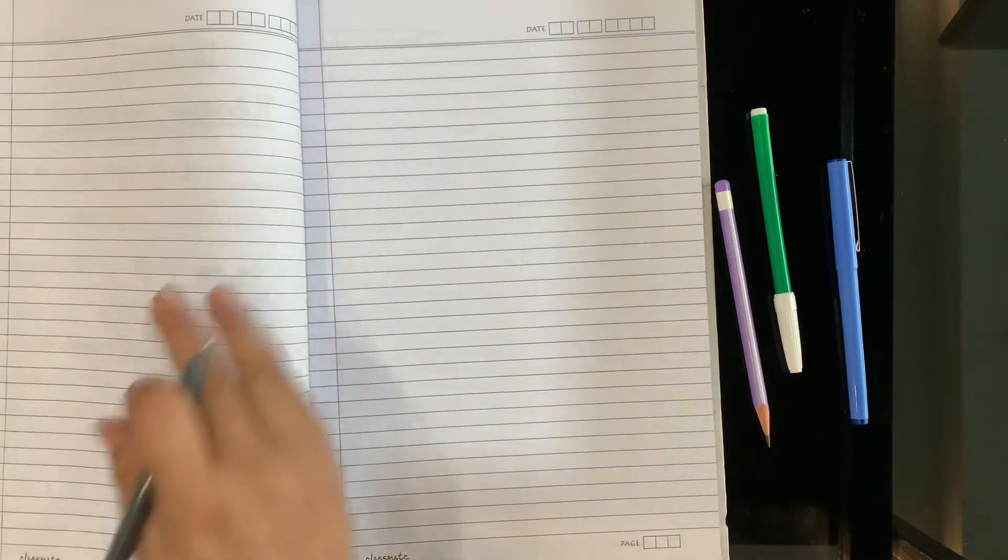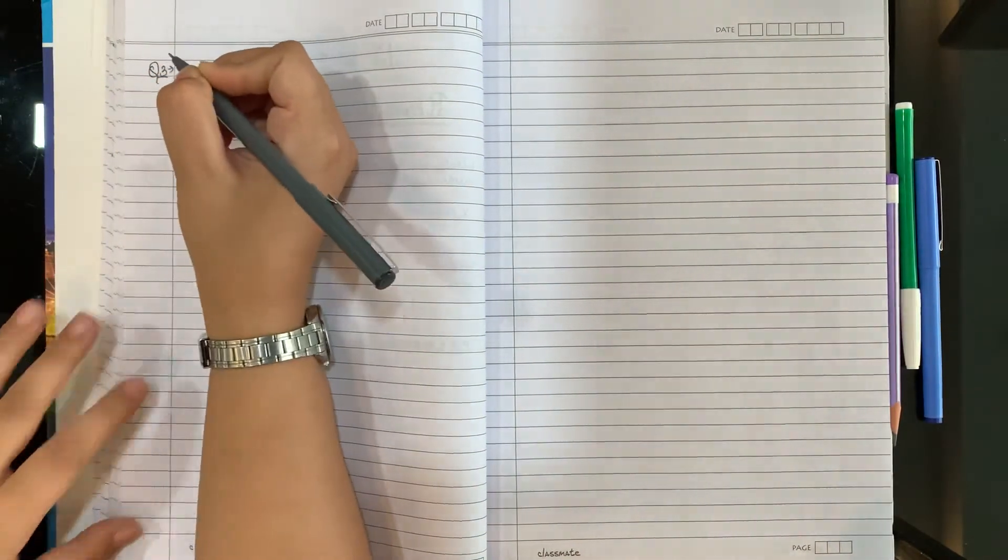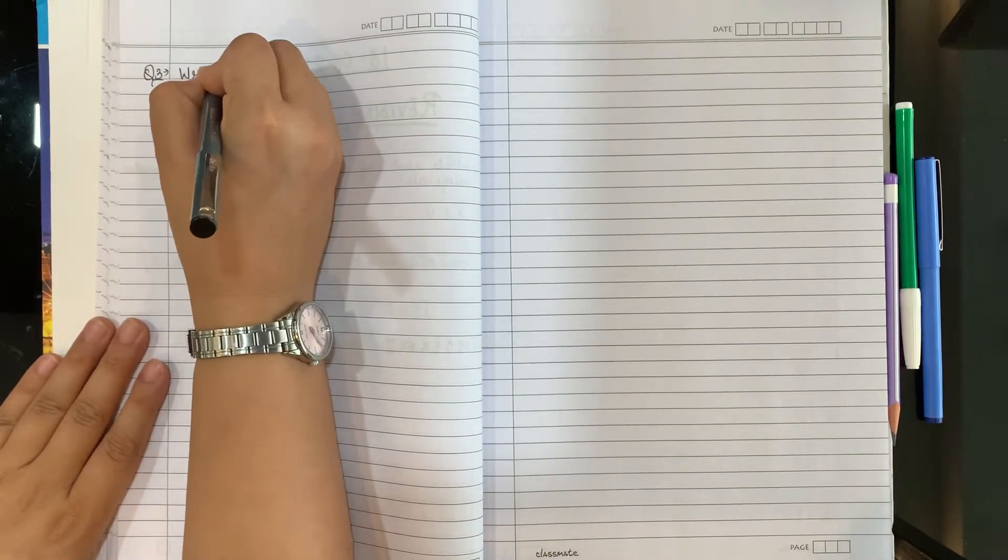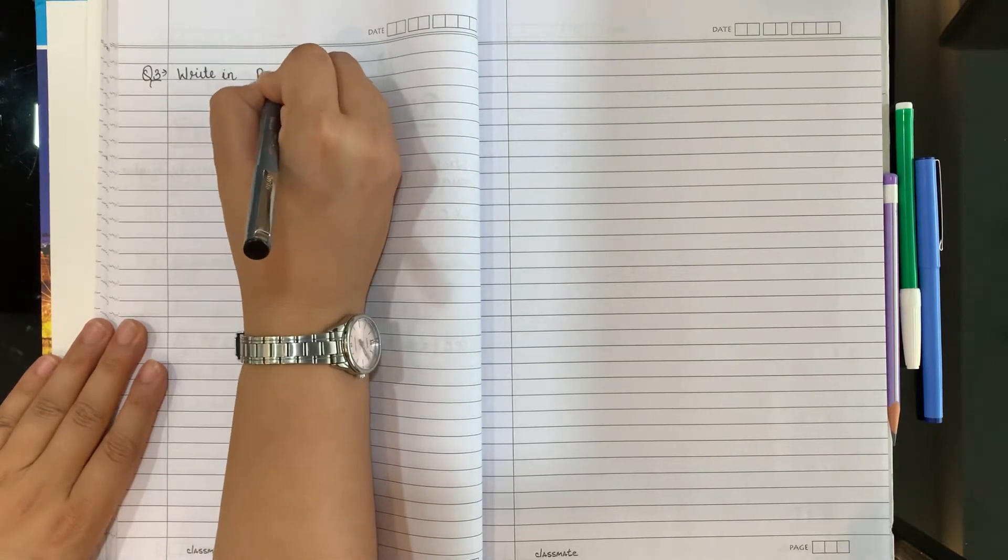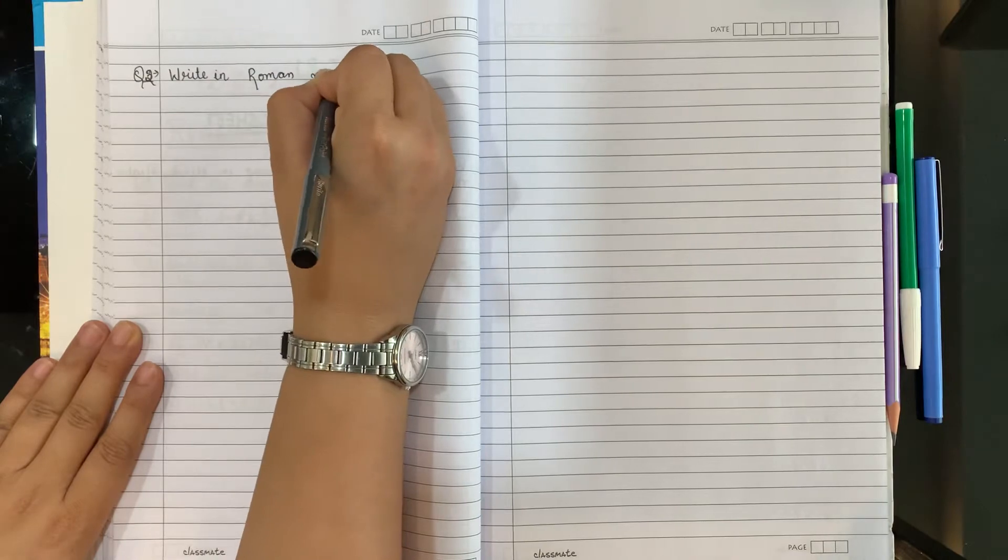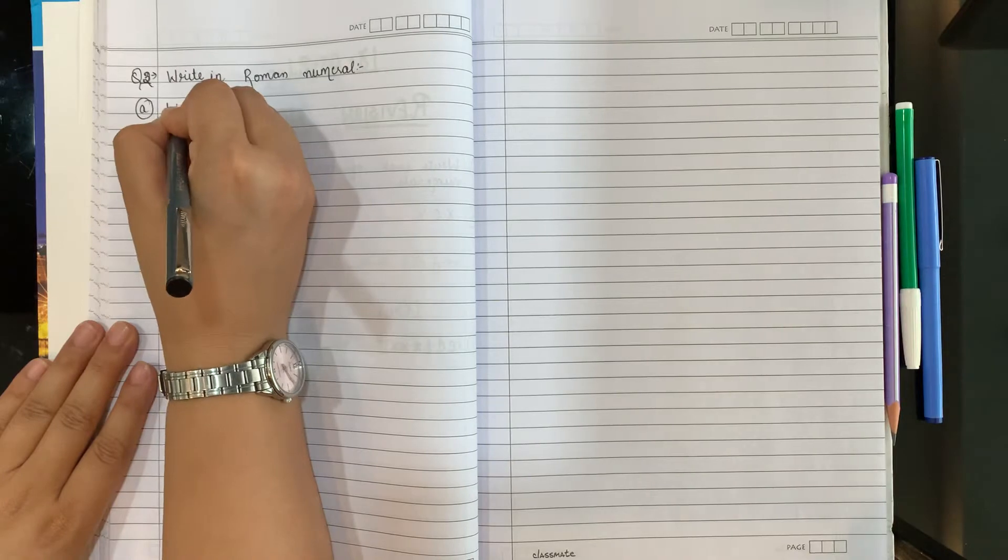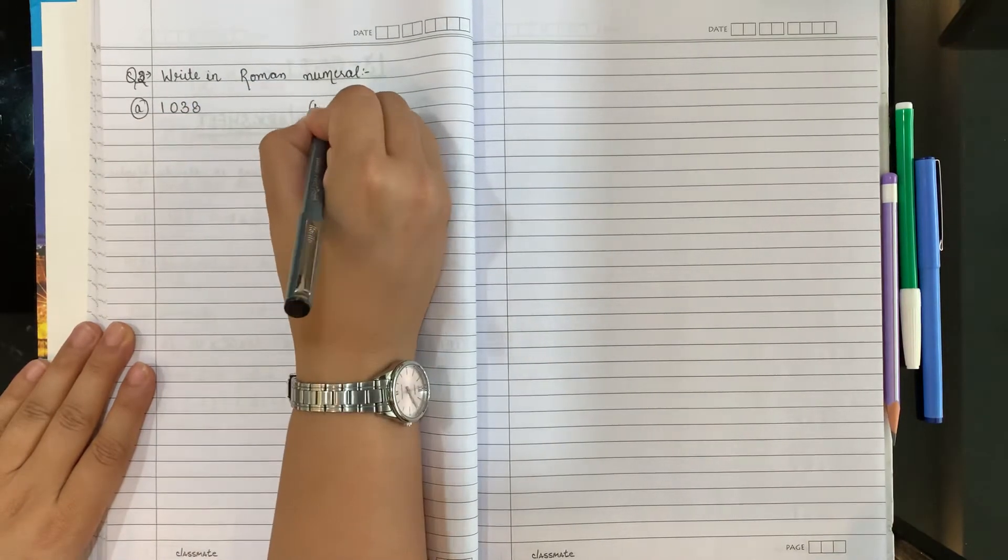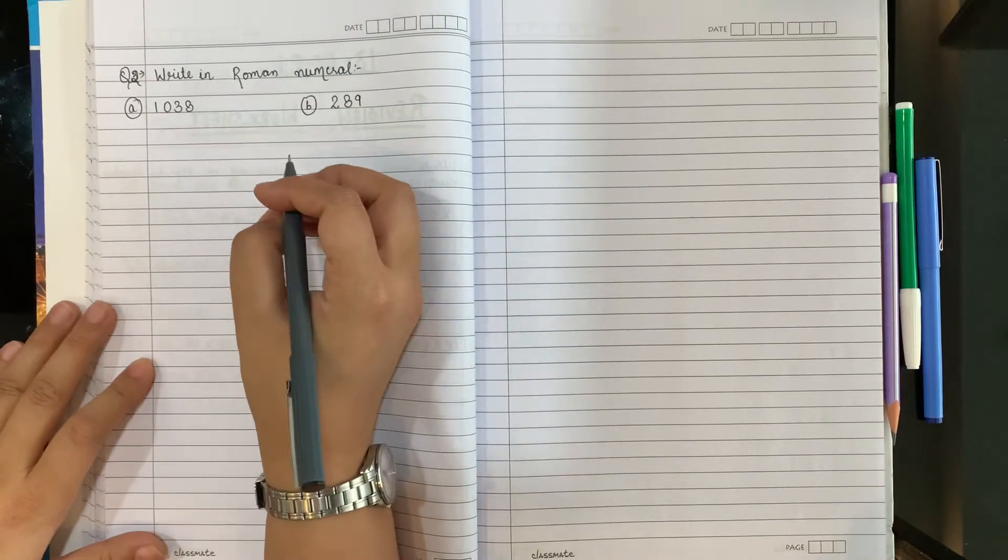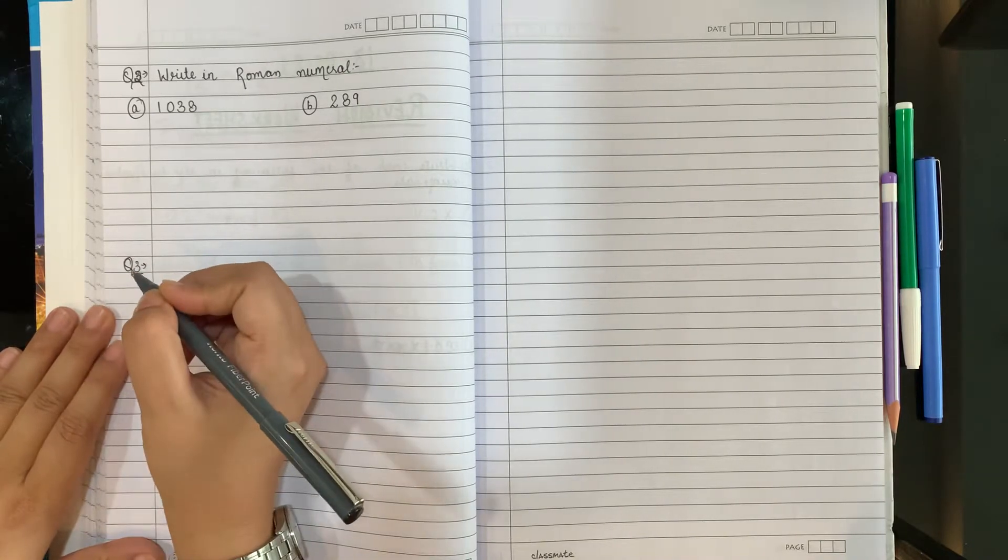Come to another page. Leave the space for answers. They will solve the worksheet at the last. Write down next question. Write in Roman numeral. Second question is write in Roman numeral. Write in A part: 1038. Write on B part: 289.